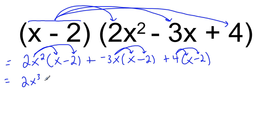So I end up here with again 2x cubed, minus, and then 2x squared times 2 is 4x squared, subtract 4x squared. And then I have negative 3x times that, so that's negative 3x squared. Negative 3x times negative 2 is plus 6x. Plus 4 times x is 4x, 4 times negative 2 is negative 8.